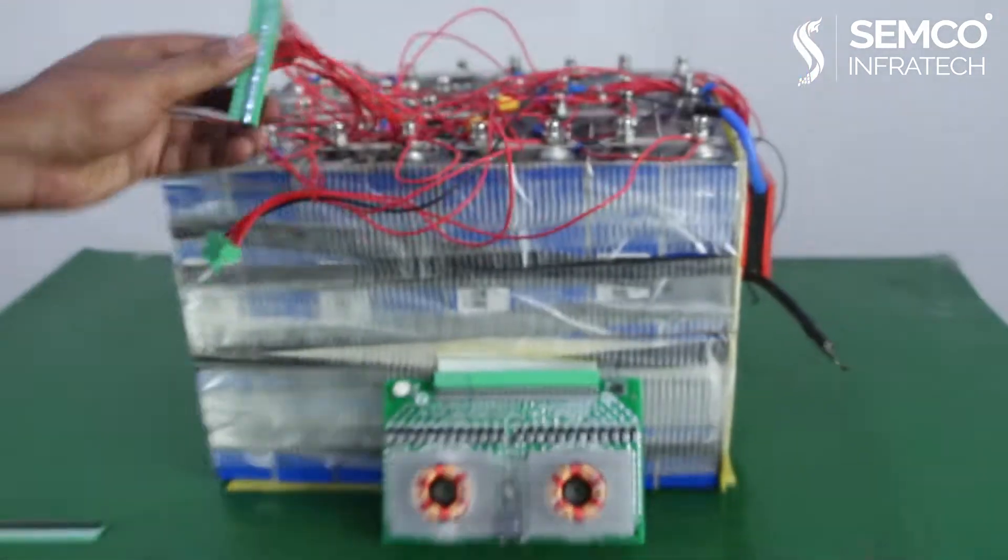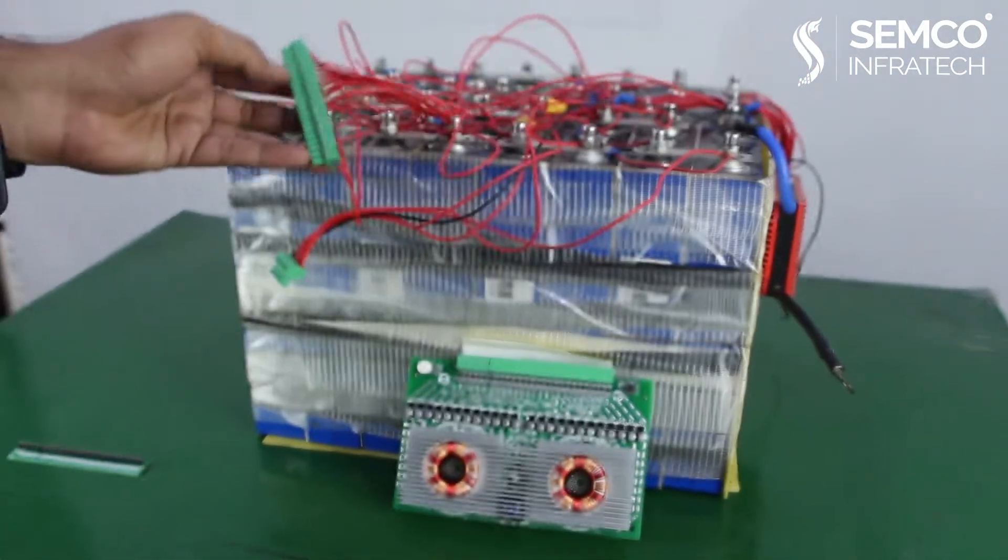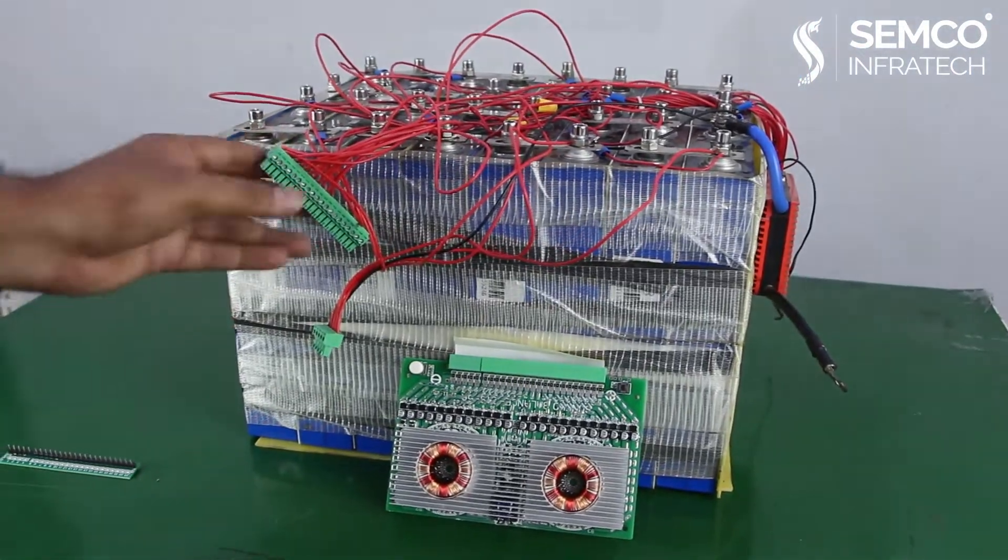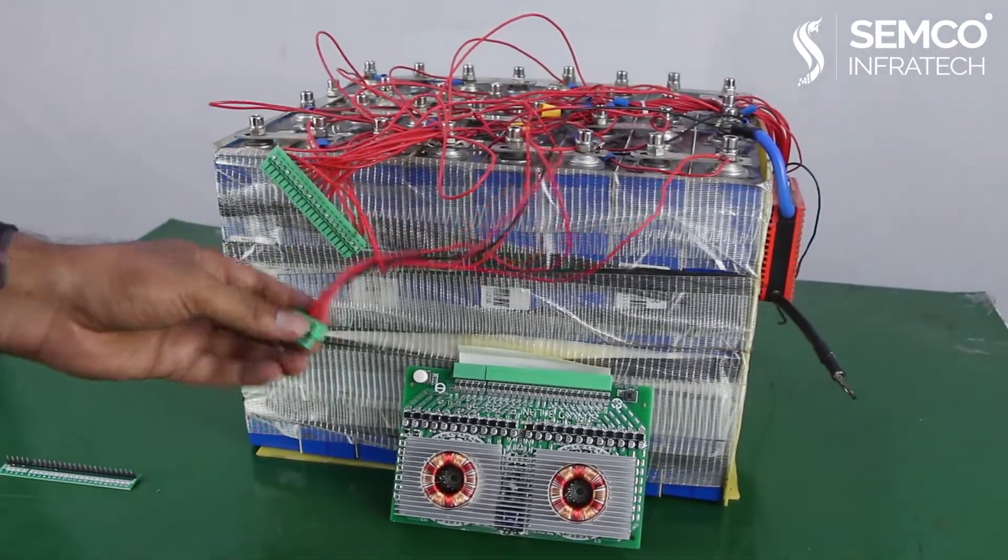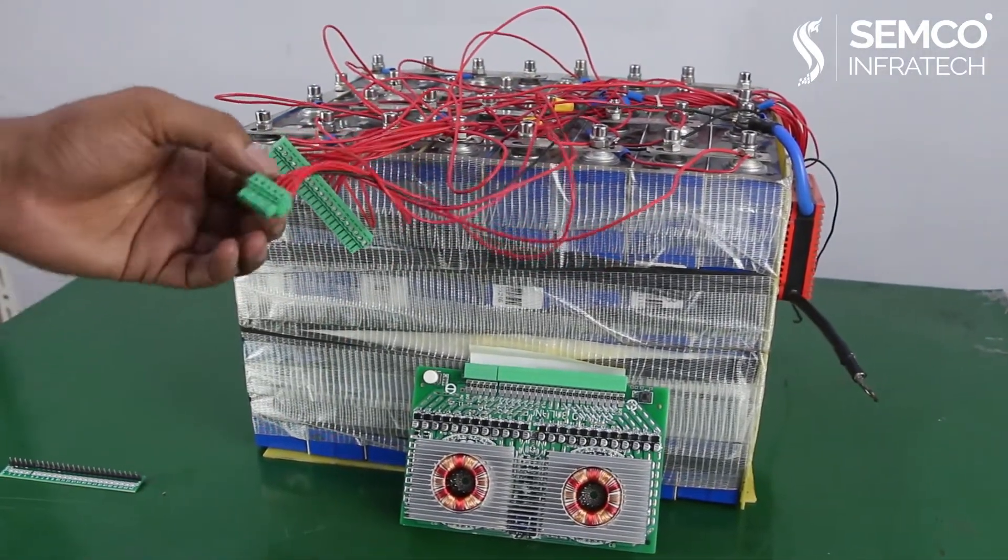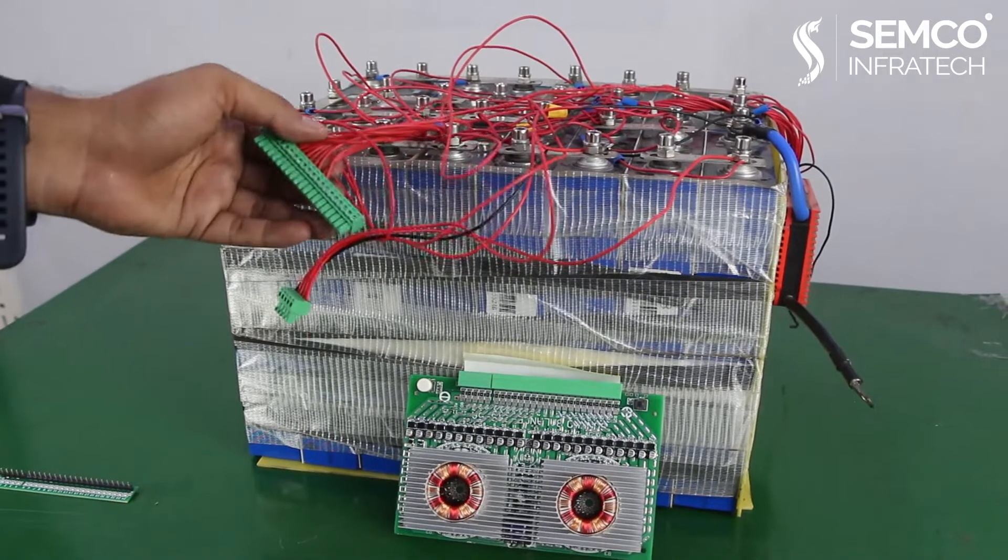Now you can see this is the port for connection. This battery has a 16S, so we connect the 16. This is for negative and 1, 2, 3, 4, and for all of the 16.